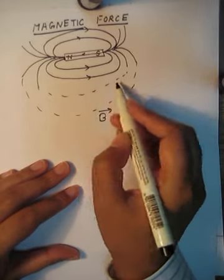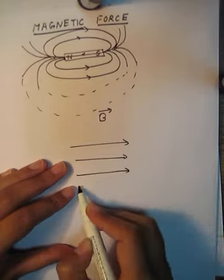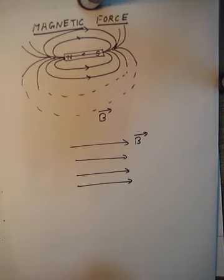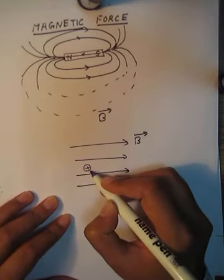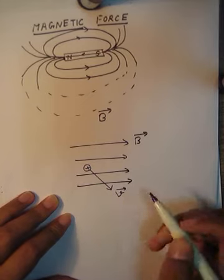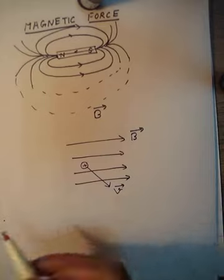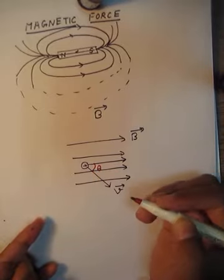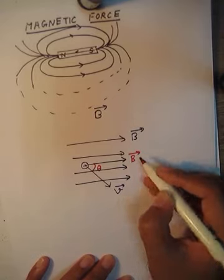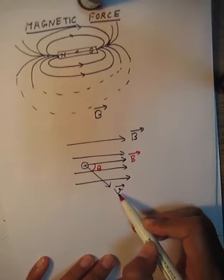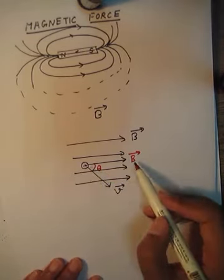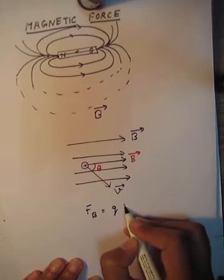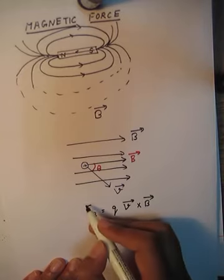So if you have a magnetic field and there is a charged particle, let us say a positively charged particle, and it is moving in this direction with some velocity V, then this V vector is making an angle theta with the magnetic field. So if a charged particle is moving in a magnetic field with some velocity V and is making an angle theta, it will experience some force due to the magnetic field. That force is defined by Q V vector cross B vector, and it is a vector.